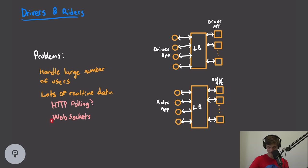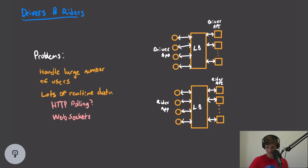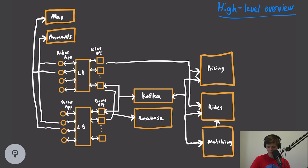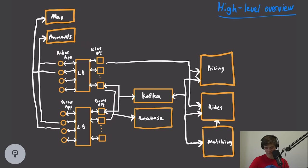A much more scalable solution is to use WebSockets. WebSockets enables our rider app to maintain a persistent connection with our API, and the API can actually push data back down to the app. This means that when the driver updates their location, the rider can simply receive that update immediately. Taking a look back at our high-level overview, we can see we've swapped out our API for our completed solution.